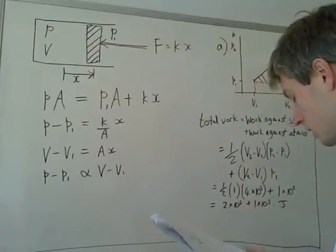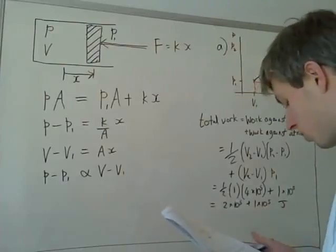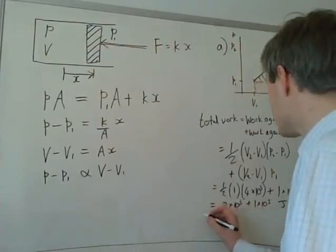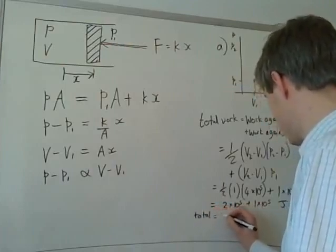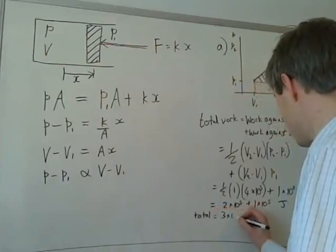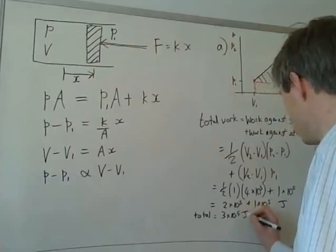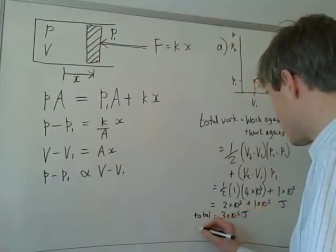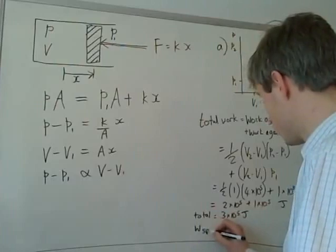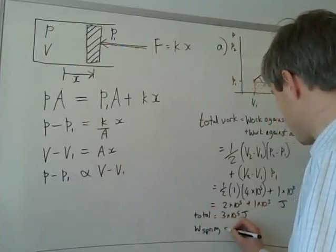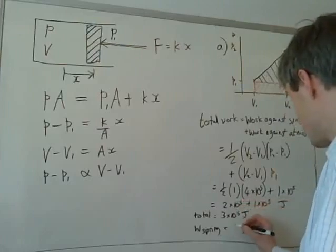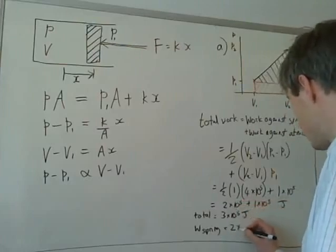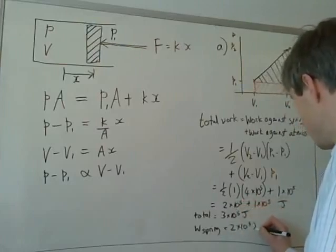And then the final part of the question asks the work done by the spring and the total work done. So, the total work done is going to be three times ten to the five joules. And the work done against the spring is just the first part of this, which is two times ten to the five joules, or we could convert that into kilojoules, which is two hundred kilojoules.